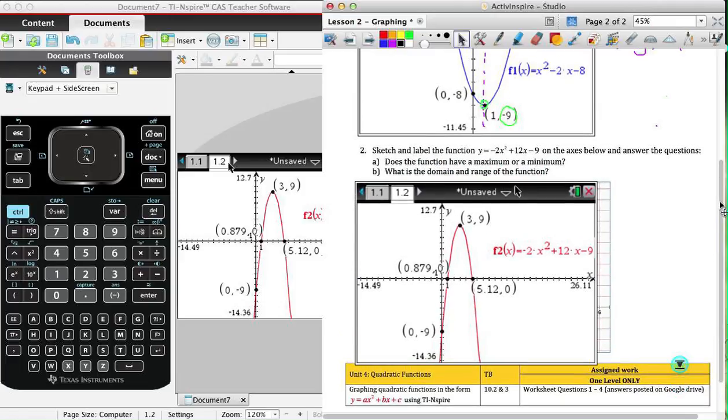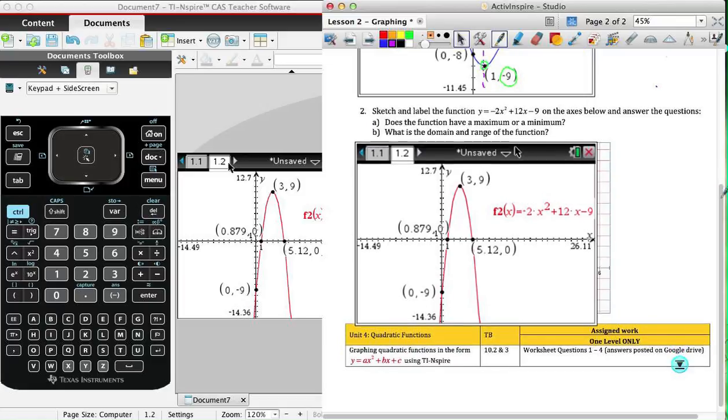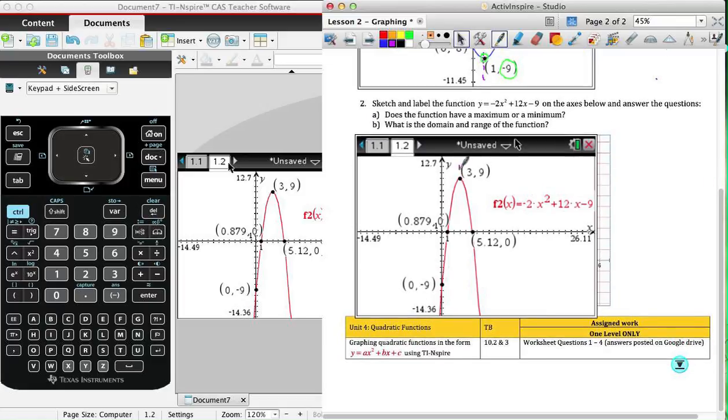I'll now be able to write on it. Once again we have an axis of symmetry which has an equation of x = 3. Our function name is over there. We of course have a maximum. The domain of the function is all numbers, and our range is y less than or equal to...